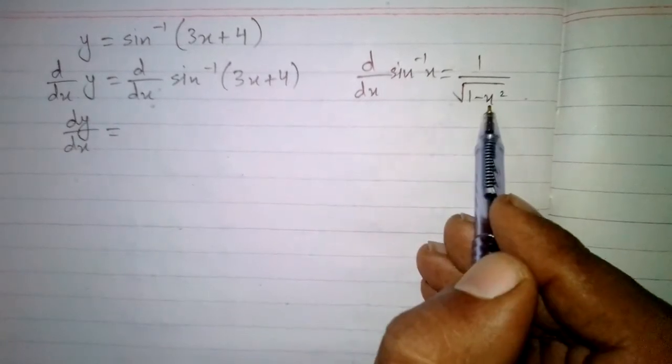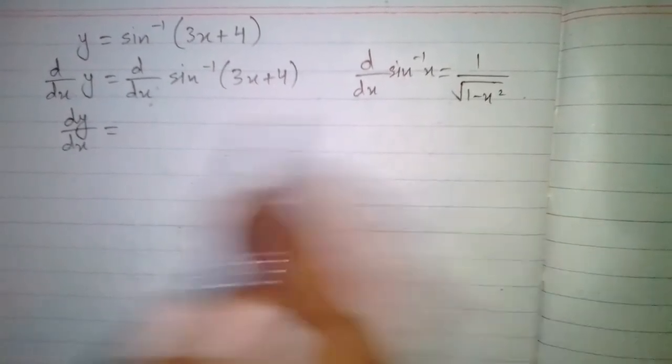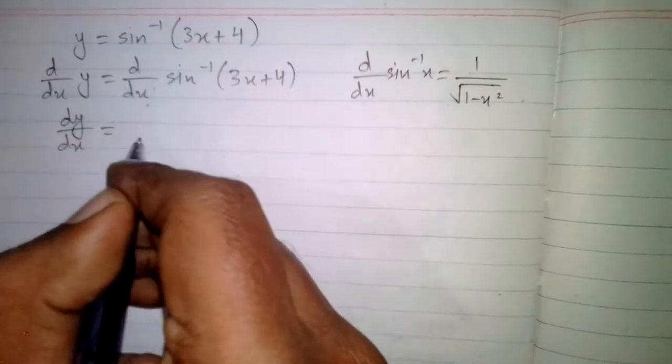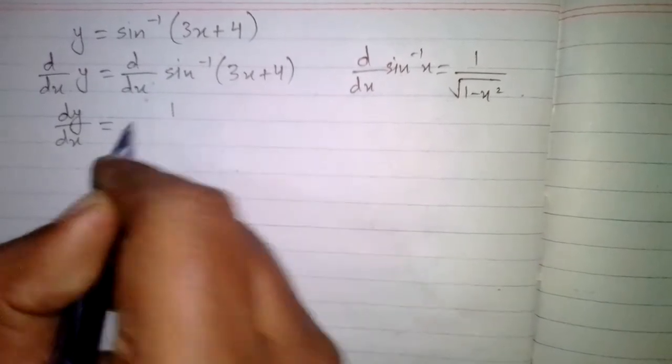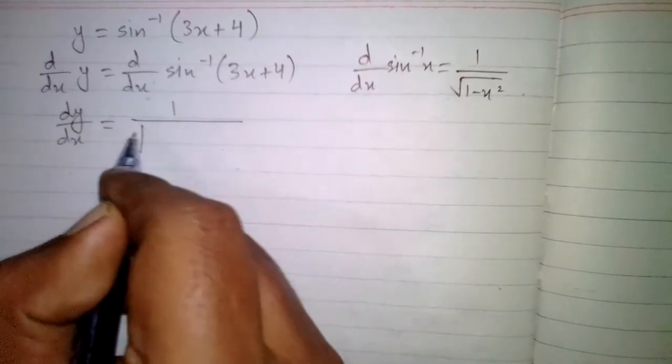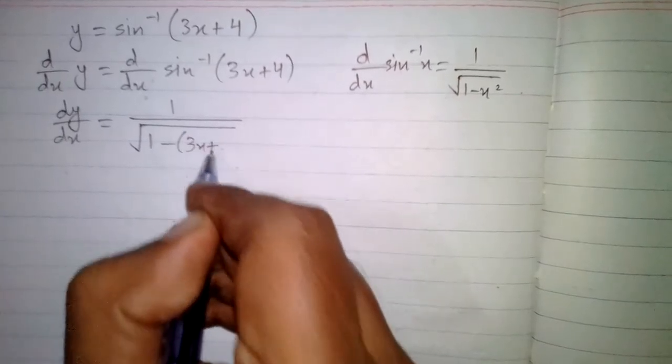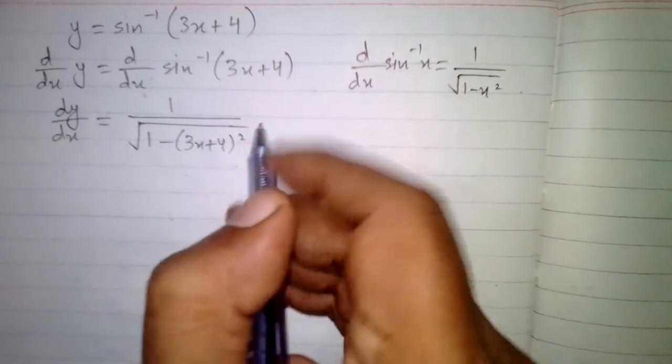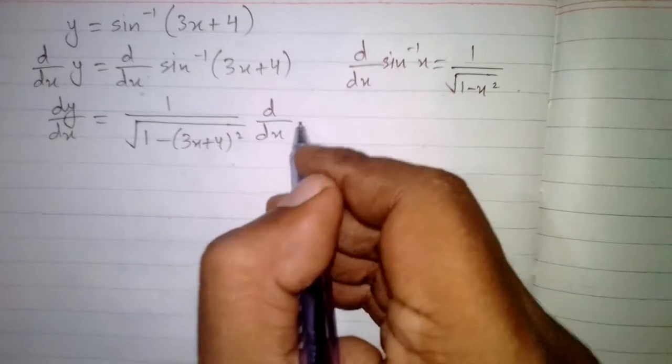So we will put 3x plus 4 in place of this x when we differentiate this function. So the derivative of sine inverse 3x plus 4 is 1 upon square root of 1 minus 3x plus 4 square. And then we will multiply this by the derivative of 3x plus 4.